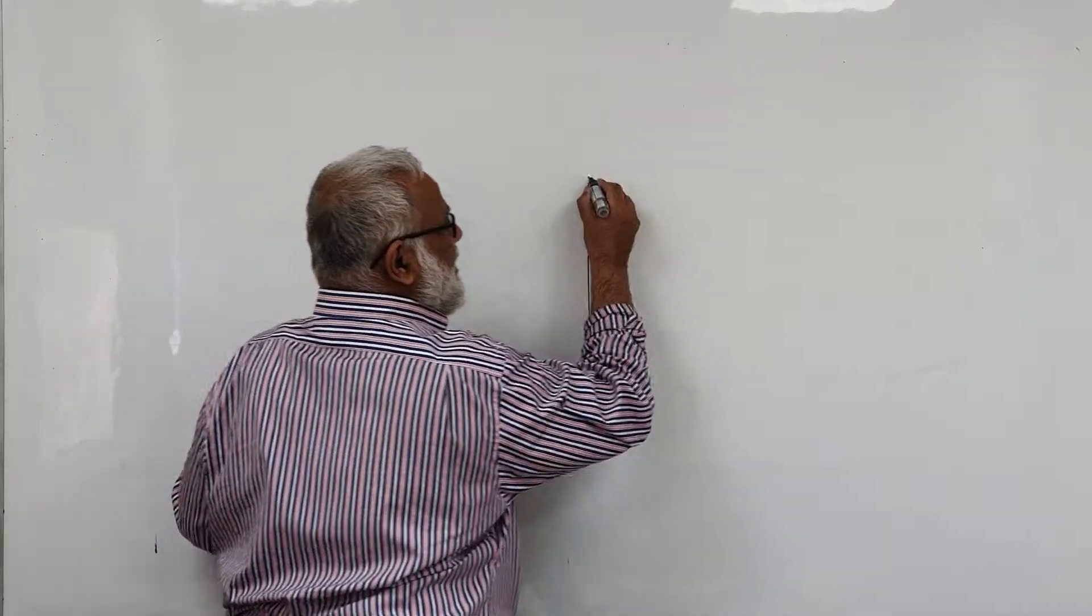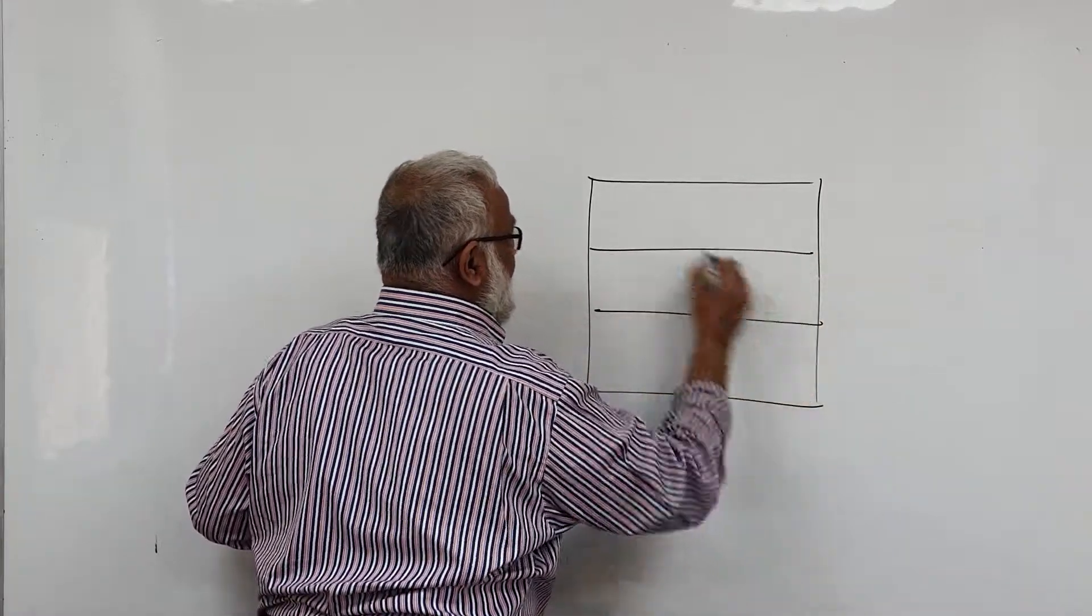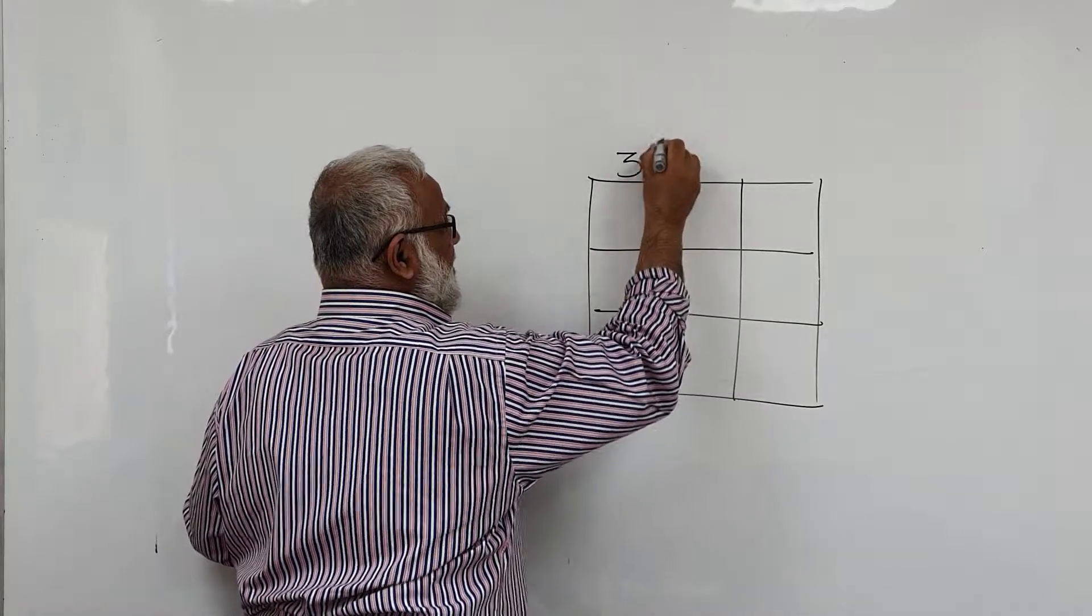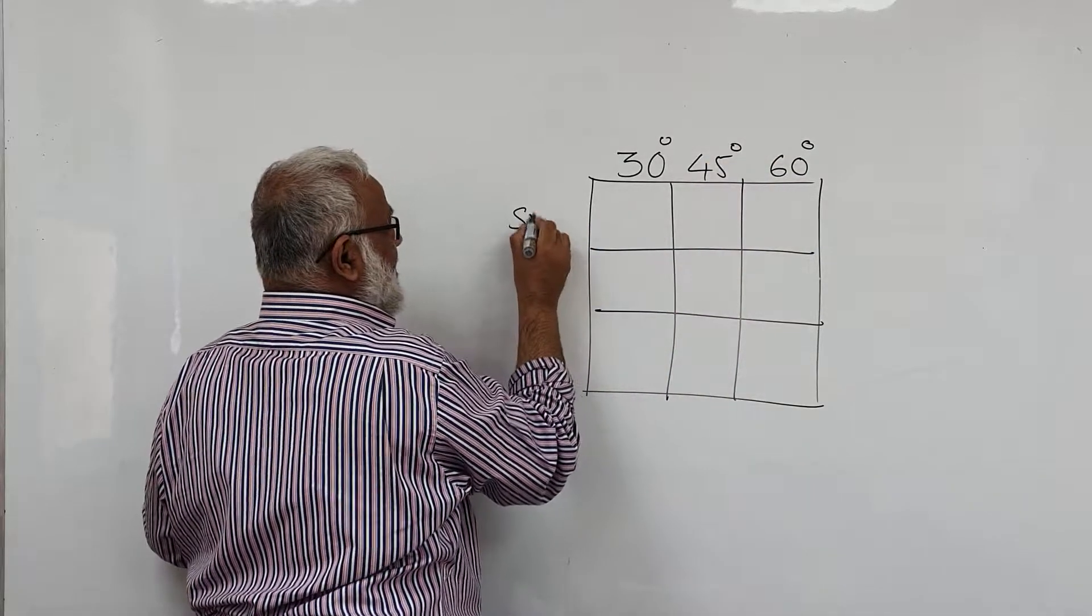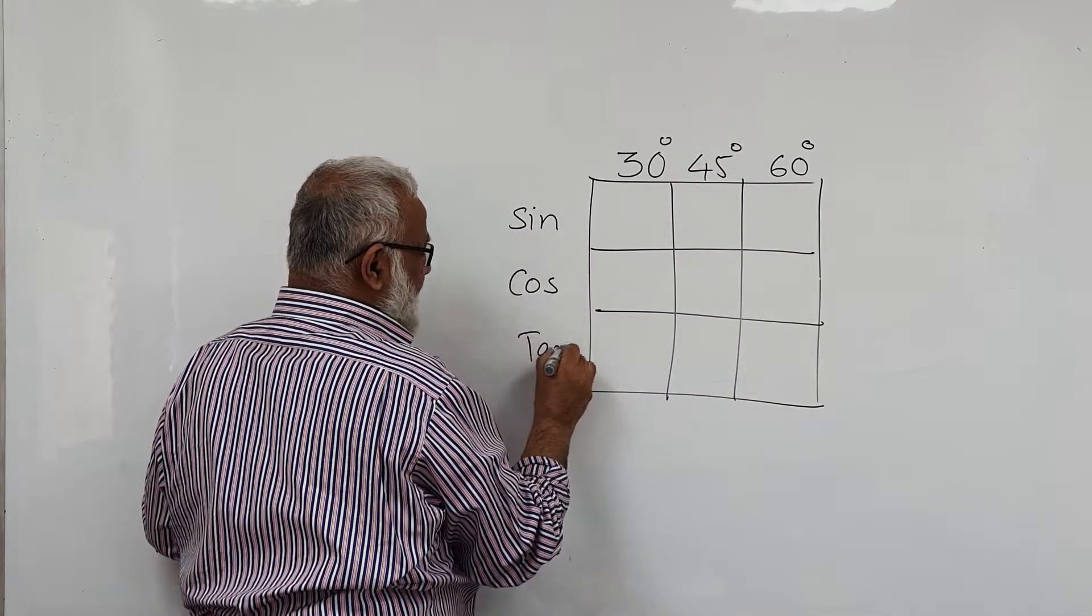So first of all, you just remember that's 30 degrees, 45 degrees, 60 degrees. Sine, cosine, and tangent. The shortcut is...